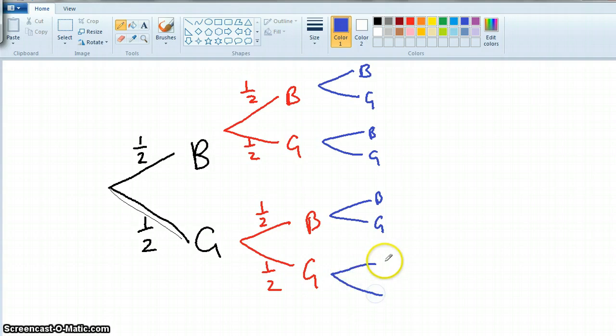Remember, this actually has a problem, doesn't it? Because it doesn't allow for twins. And at the moment, we're just assuming the 50-50. So it's a limited look at it, but we're just going with it.